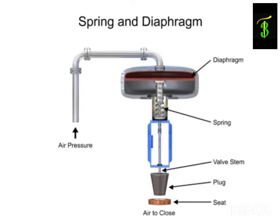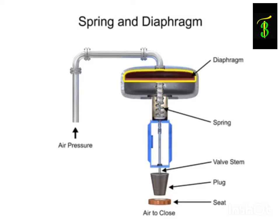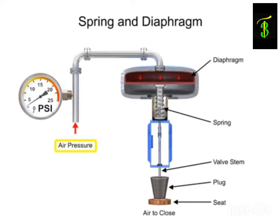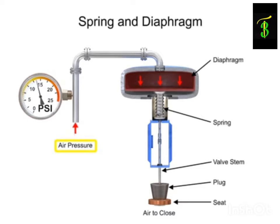As the name suggests, the spring and diaphragm actuator uses a spring and a diaphragm to move the valve stem and plug. A 15 psi pneumatic signal enters the housing at the top of the actuator. As pressure is exerted on the diaphragm, a downward force is applied against the spring which moves the restrictor. The diaphragm moves until it creates an equal but opposing force against the spring, at which time the motion stops as the plug meets the valve seat.